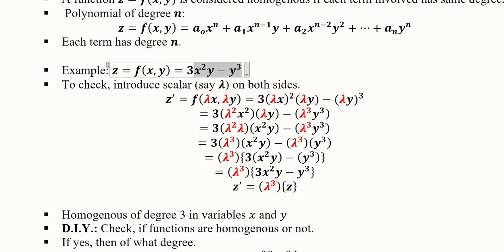It means that now the function has become lambda cube times the original function. So this is how we can say that this function z was homogeneous, and it was homogeneous of degree 3, because we look at the power of the scalar. If it is 2, for example, it becomes degree 2. If it is 1, then it becomes degree 1. So the degree of homogeneity is 3.